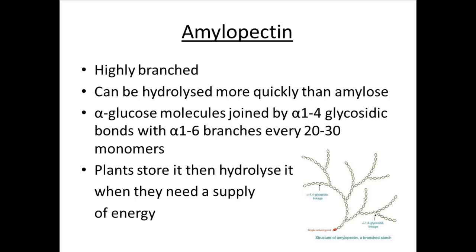Condensation is how you put together monosaccharides, and hydrolysis is how you split them apart — lysis actually means to split. The alpha-glucose molecules are joined by 1-4 glycosidic bonds, and there are alpha-1-6 branches every 20 to 30 monomers. This more branched structure means you can quickly break it down so the plant can respire.